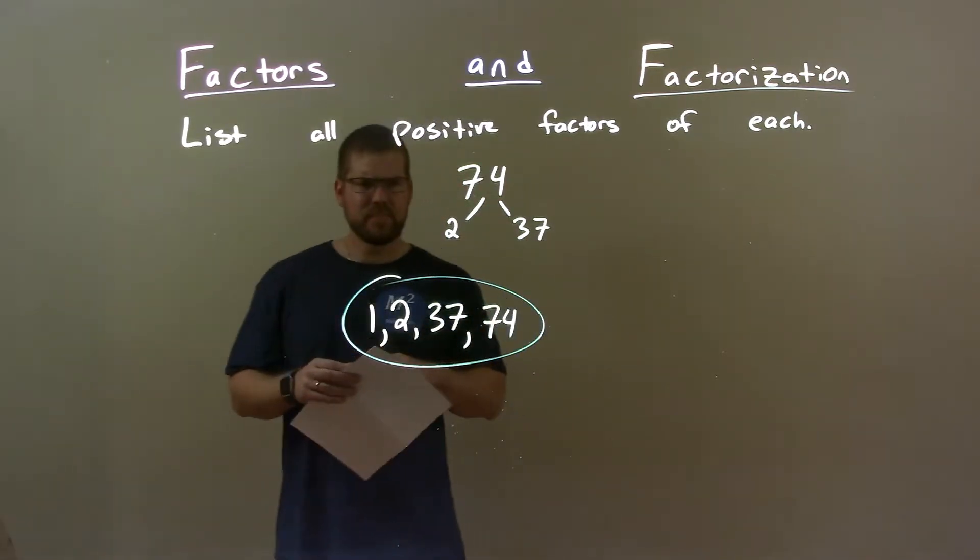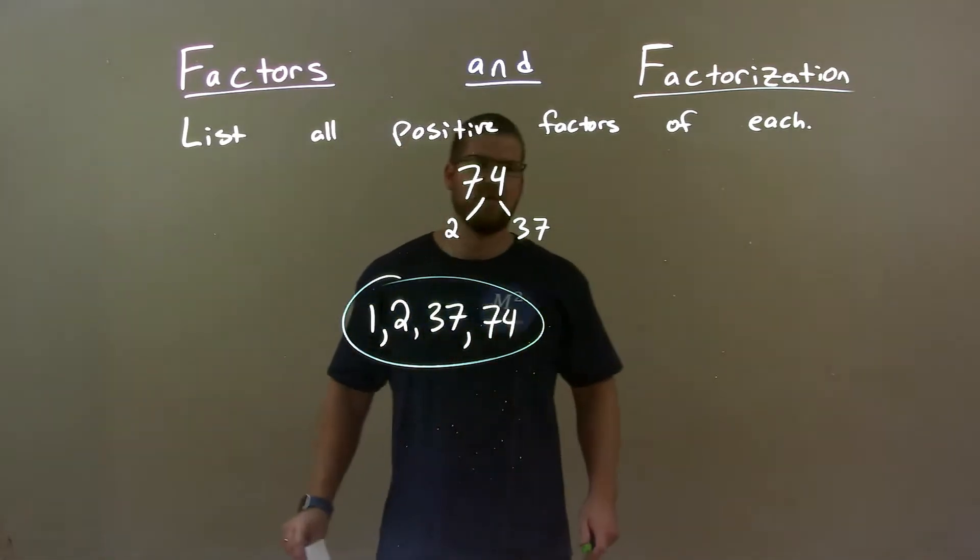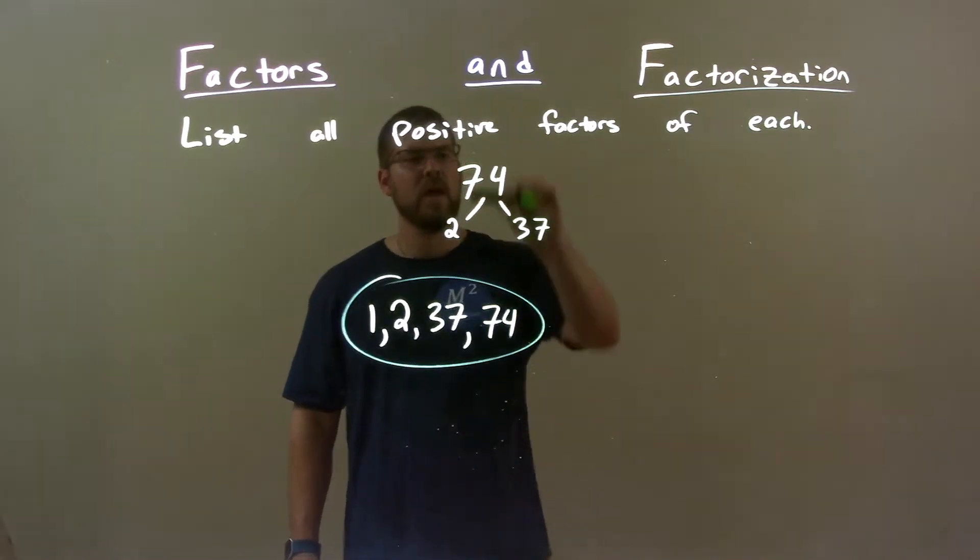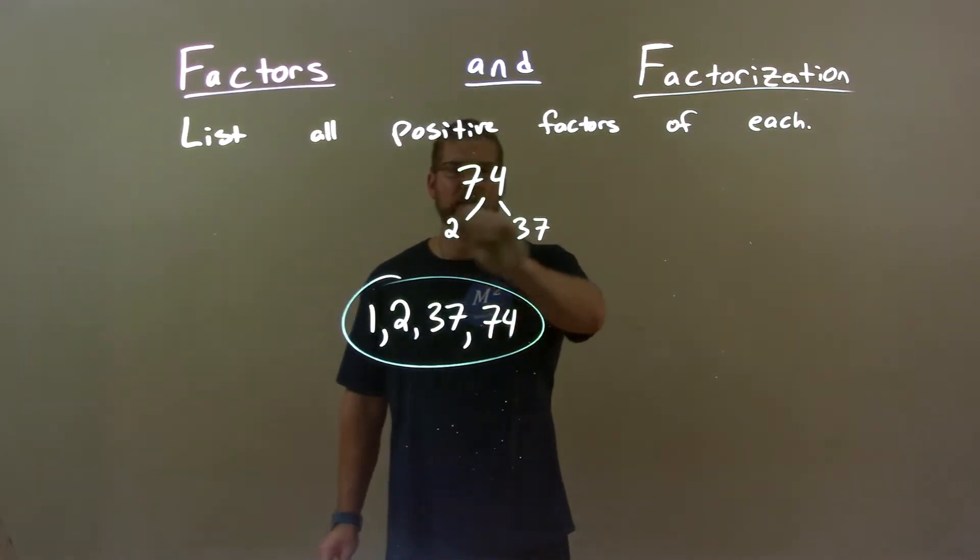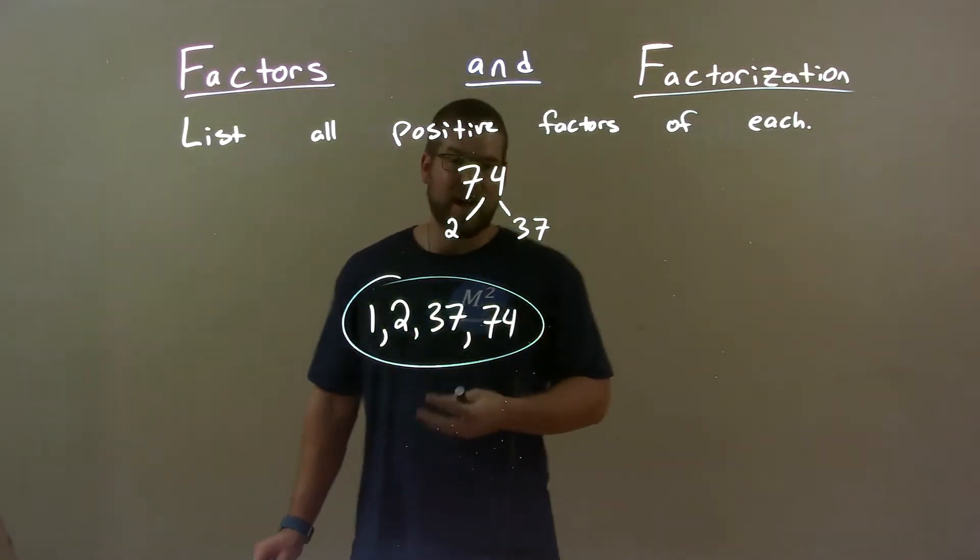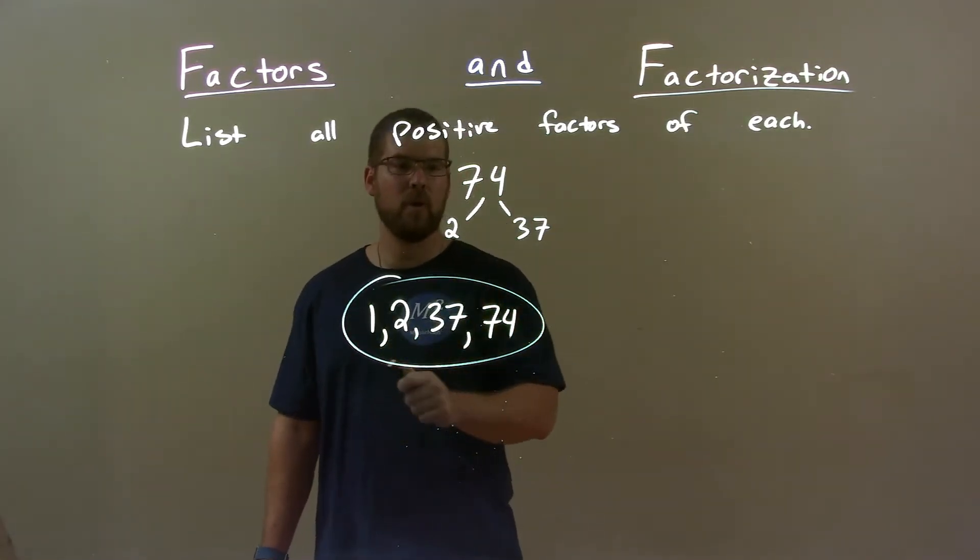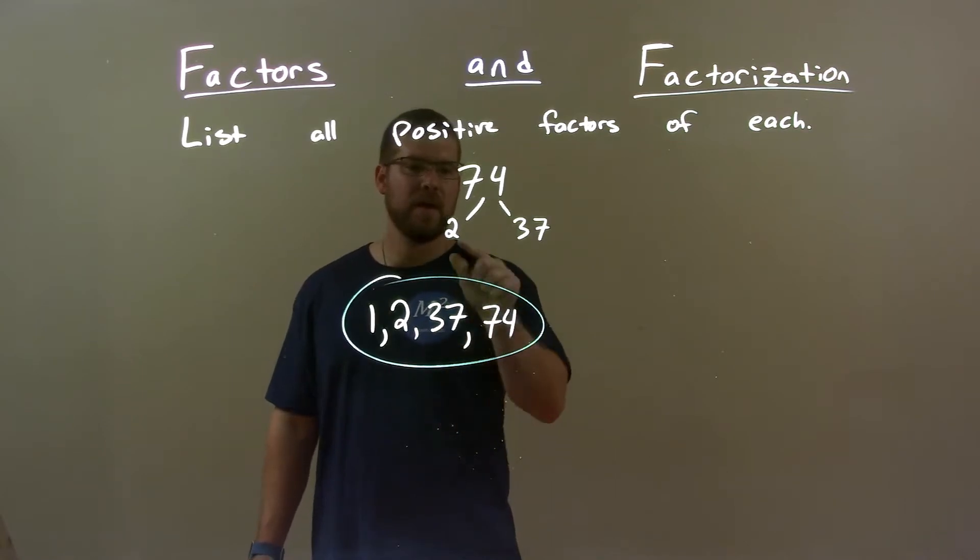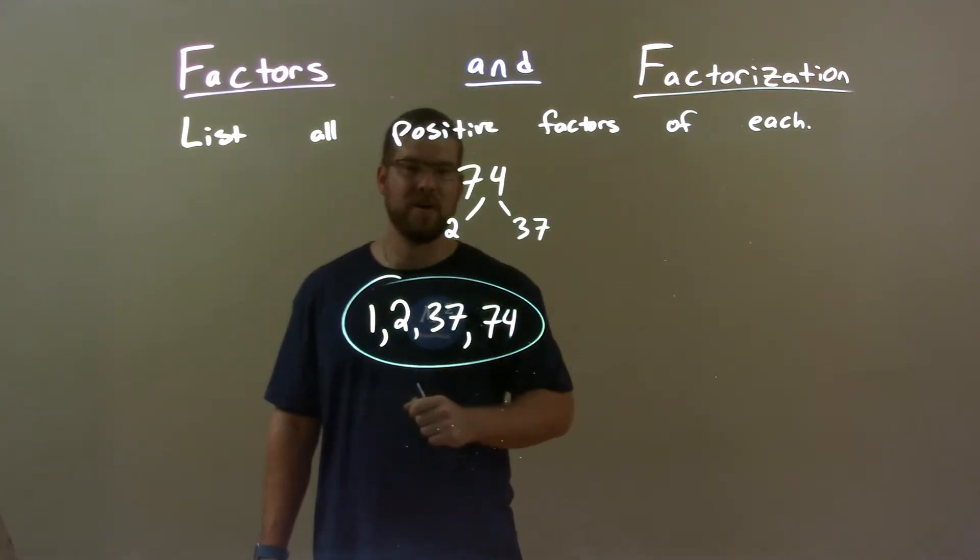So, quick recap. We're given the number 74, and we have to find all the positive factors of it. Well, when I did my prime factorization, I got 2 and 37. Since there's only two numbers, we're kind of done. 1 will always be 1, and so is 74.